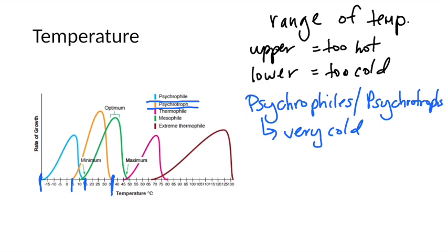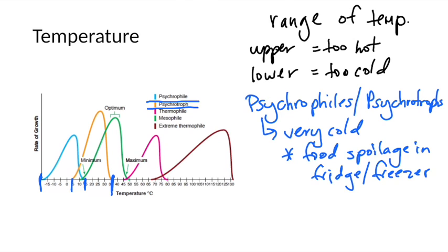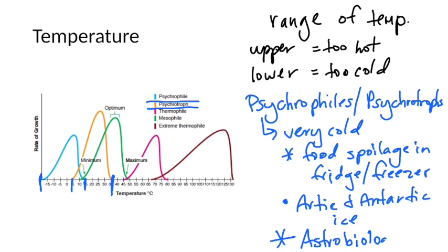These would be the kind of bacteria or archaea that could cause food spoilage even in your fridge. And they're the type of organisms that we would expect to find when we take samples of things like Arctic and Antarctic ice. There's an entire field of microbiology that's grown up around the study of bacteria that can survive at very cold temperatures, and it's called astrobiology. Astrobiologists think that by studying these organisms that live at extreme temperatures, we can have an idea of what life might look like on other planets, where it's colder or hotter than where our life can survive.